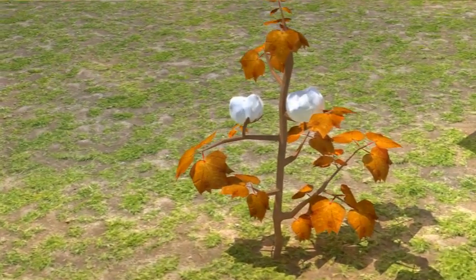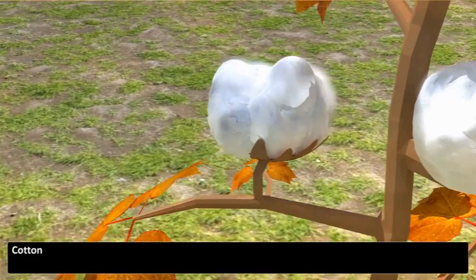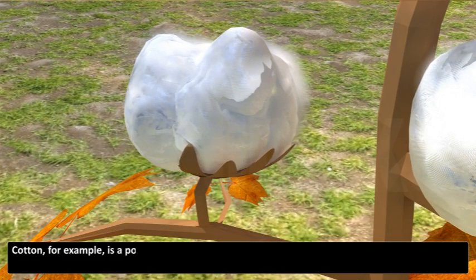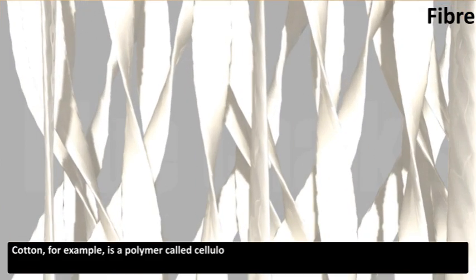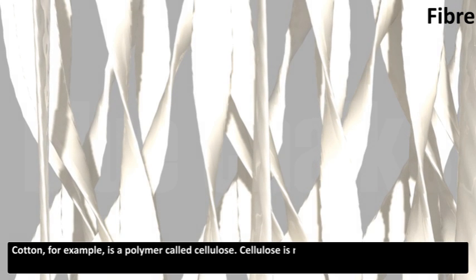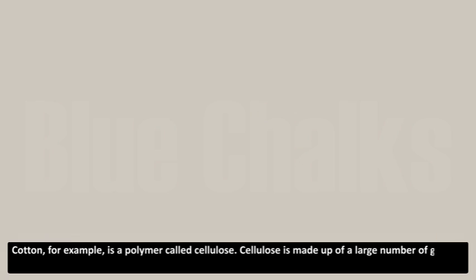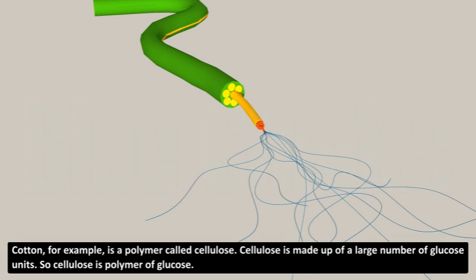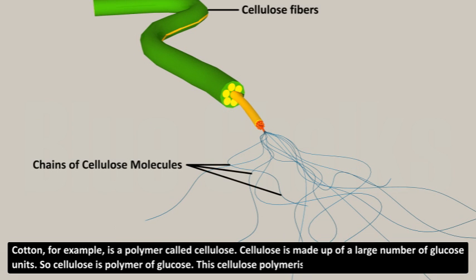Polymers are found in nature also. Cotton, for example, is a polymer called cellulose. Cellulose is made up of a large number of glucose units, so cellulose is a polymer of glucose. This cellulose polymerizes to form the cotton molecule.